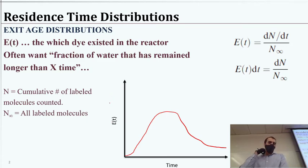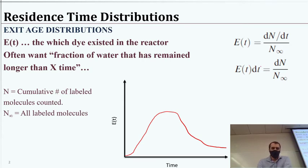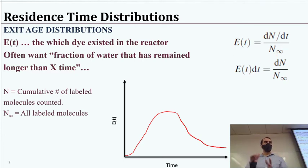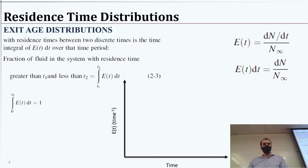If we take a look at trying to integrate this, or get rid of the derivative and separate variables, we get E(t) dt equals dN divided by N-infinity. This will give us a way to integrate and see how this can convert into the cumulative case. So this is the exit age, looking at when the dyes are coming out as a function of time since we started the process.